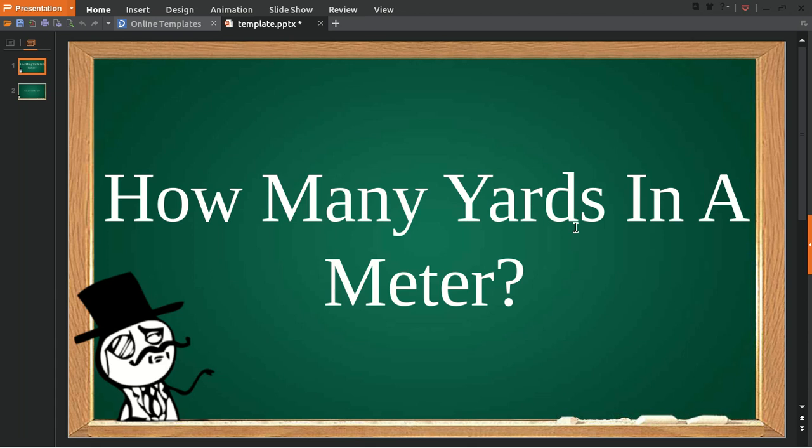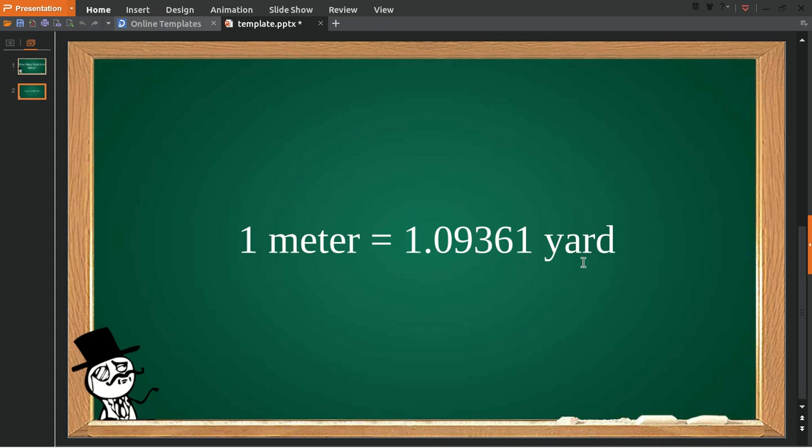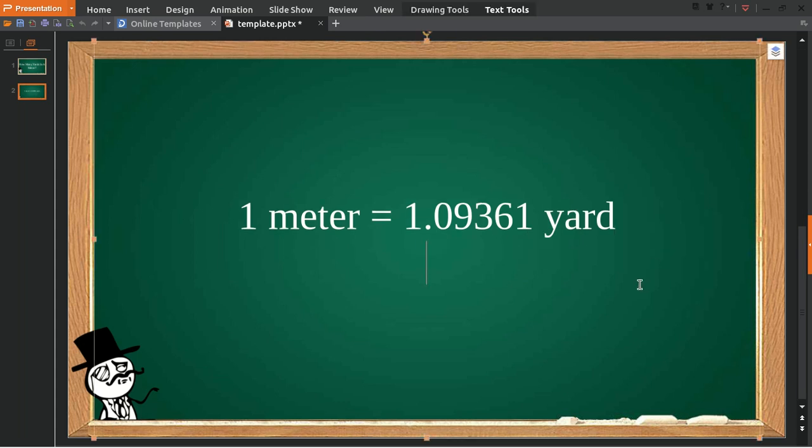Hello, how are you? In today's video we're going to answer the question: how many yards in a meter? To solve this problem, I'll provide you with the answer. One meter is equal to 1.09361 yards.